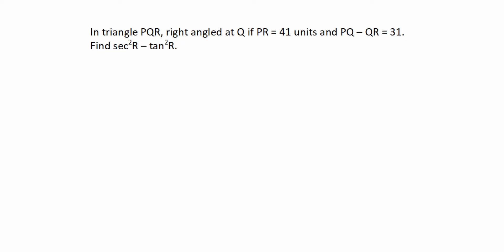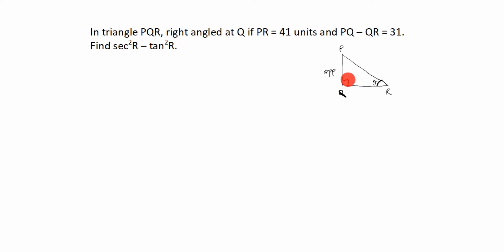So what you will do in this case — given triangle PQR, the right angle is at Q. We have to draw triangle PQR. Secant R means R is the angle in this case. So the angle comes this side, meaning this is the opposite side. This is a right angle triangle — the longest side is the hypotenuse. So this is the hypotenuse, and the remaining side is adjacent.